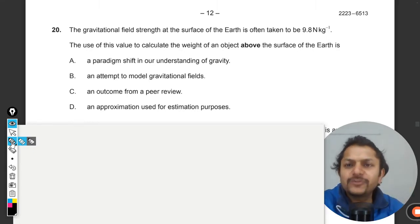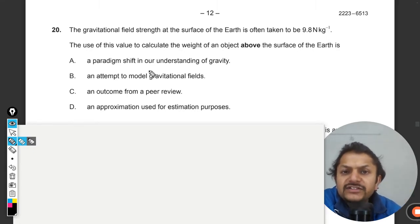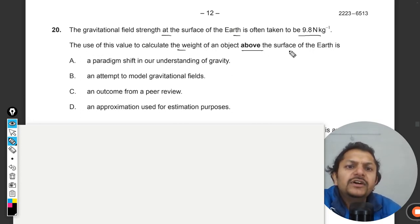Okay, let us see what is there in this question. The gravitational field strength at the surface of the Earth is 9.8 newtons per kilogram. The use of this value to calculate the weight of an object above the surface of the Earth is...